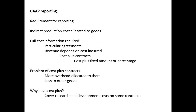Cost allocation encourages managers to evaluate the use of the services provided. GAAP reporting is required to use cost allocation, and indirect production costs are allocated to goods. Cost plus agreements are contracts that use the cost plus a fixed amount or percentage. They are sometimes used for defense contracts, and where the costs of research and development need to be covered. A problem with this type of contract is that very often more overhead is allocated to them, so that less is charged to other goods.